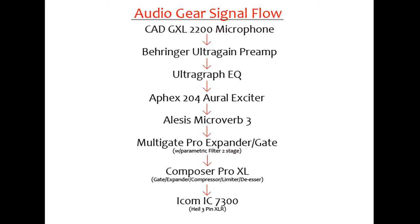From there, we go to the Multi-Gate Pro Expander Gate, which I use strictly for the parametric filters and the expander. And from there it goes into the Composer Pro, which is a gate/expander/compressor/limiter/de-esser. I use the expander, compressor, and limiter — because what you're doing when you feed this audio into the transceiver is basically taking a 900 horsepower twin-supercharged engine and cramming it into a Volkswagen Beetle. Then from there, it goes into the radio.